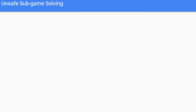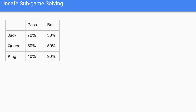The first thing we'll cover is unsafe subgame solving. We'll go back to Kuhn Poker — our three-card, highest-card-wins poker game. Here we have the blueprint strategy for player one's first action at the very start of the game, calculated with CFR: 70% pass and 30% bet for Jack, and so on. In this example, we're going to solve a subgame where we have a Queen and our opponent just bet, and we want to decide: do we call or fold?